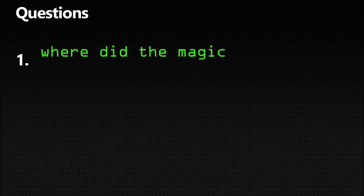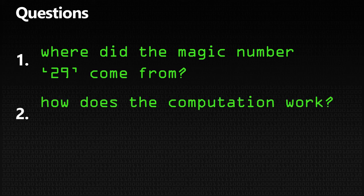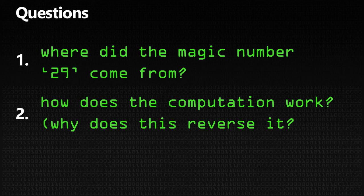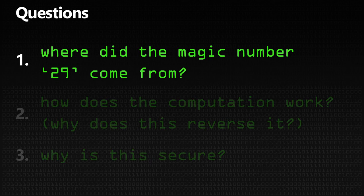There are three questions we can ask ourselves when we see this equation. The first one is: where did the magic number 29 come from? How did we get that? The second one is: how does the computation work — why does it reverse the operation? And number three is: is this secure, why is this secure? Let's answer question one. So question one is: where does the magic number 29 come from?